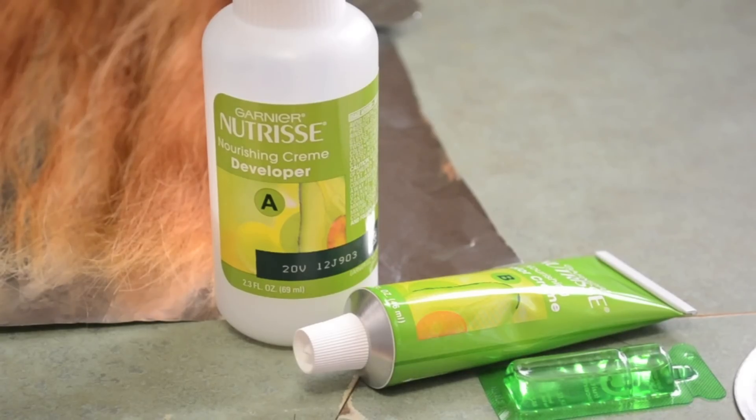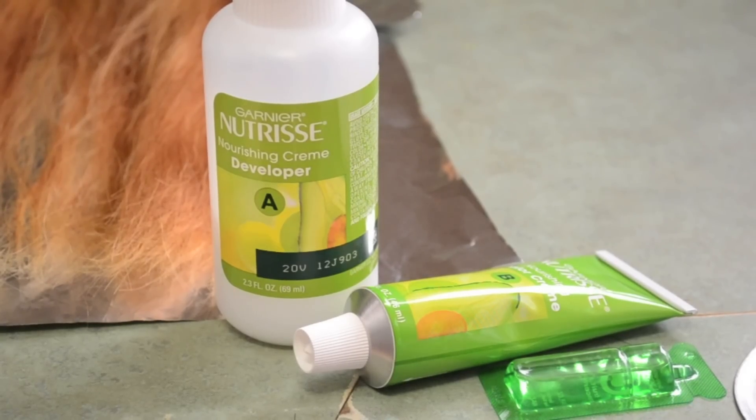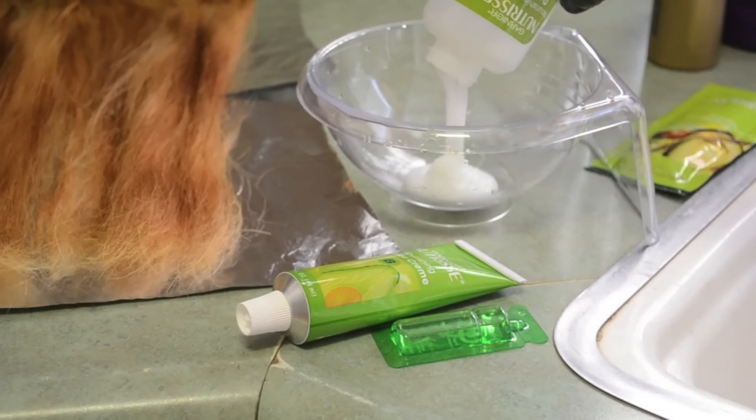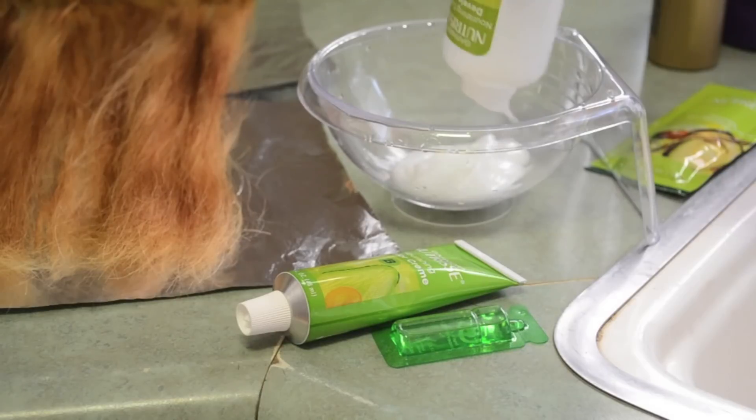So moving right along after our mistakes, I am taking some hair dye and I'm just mixing everything into the bowl for easy application. Now for my hair, I needed two boxes of this.